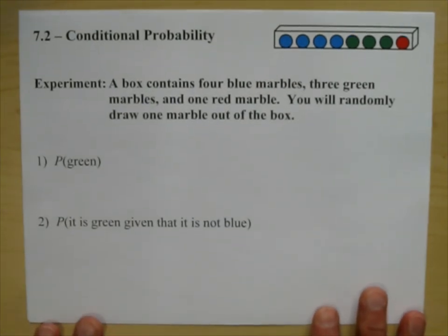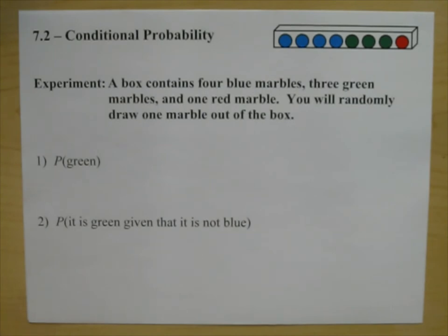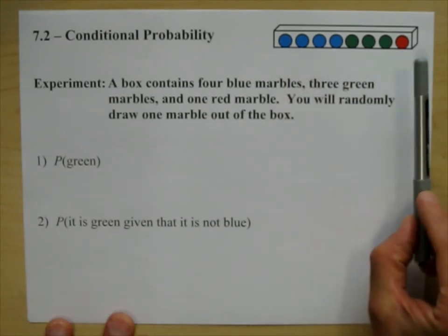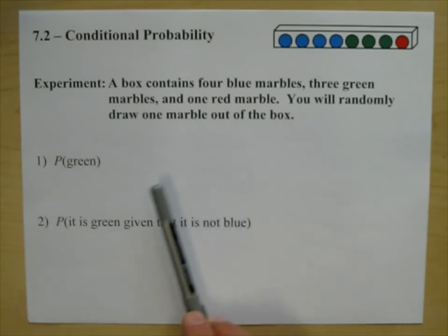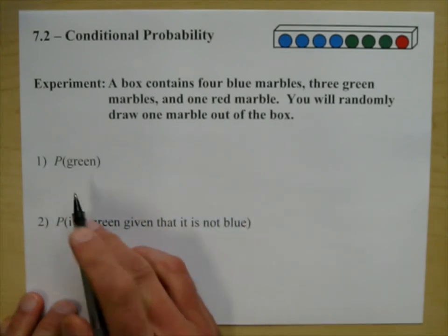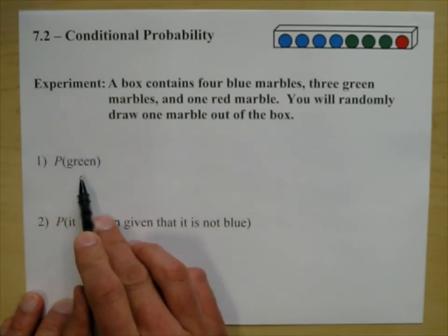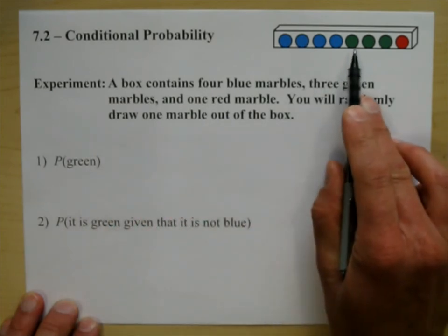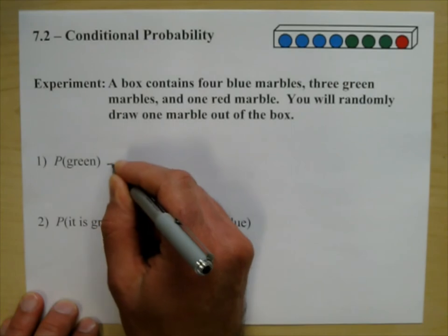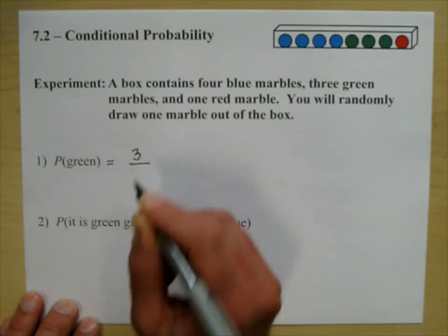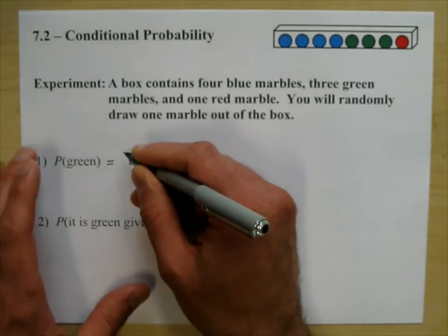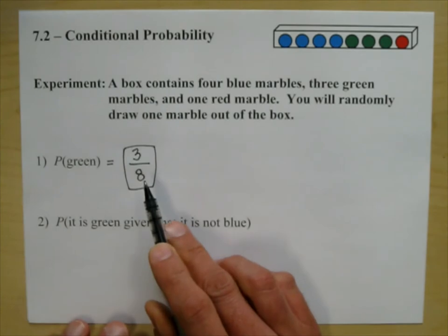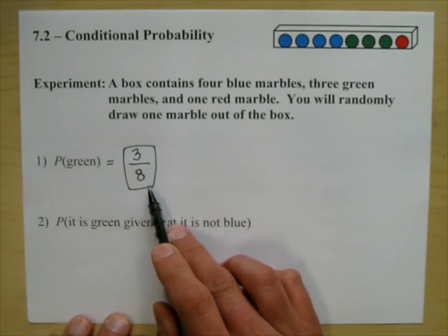Let's talk about conditional probability. You have a box which contains four blue marbles, three green marbles, and one red marble. You will randomly draw one marble out of the box. The first one is a review from 7.1: what is the probability that you pull out a green? How many greens do you have? Three greens out of eight marbles total, so the answer is three over eight.